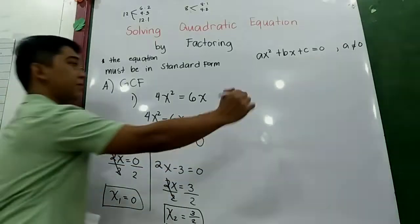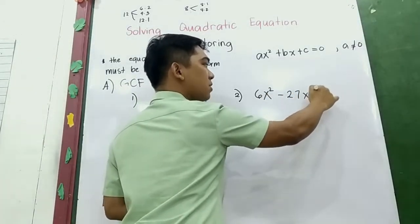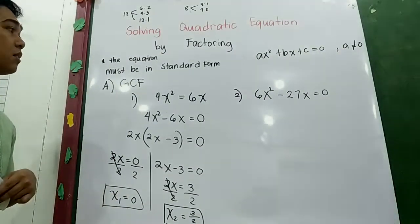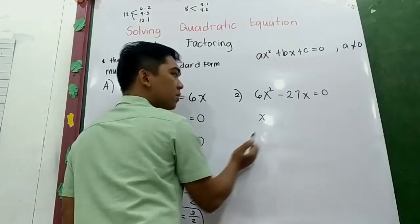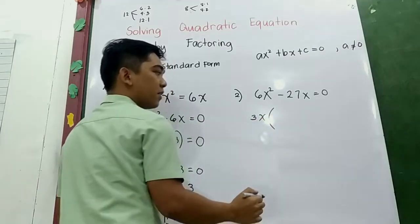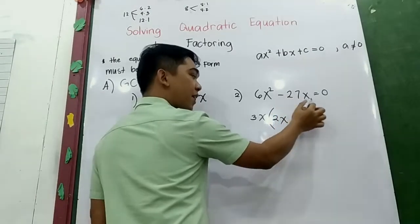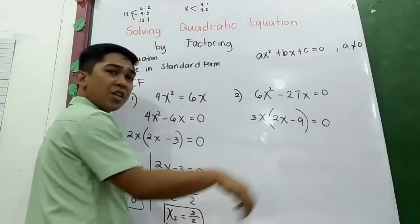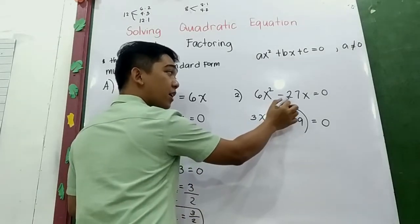Second example: 6x² − 27x = 0. It is already in standard form, so let us get the factors. The common factor of 6x² and −27x is 3x. Dividing: 6x² ÷ 3x = 2x, and −27x ÷ 3x = −9. So our factored form is 3x(2x − 9) = 0. You can check: 3x times 2x is 6x², and 3x times −9 is −27x. Correct!